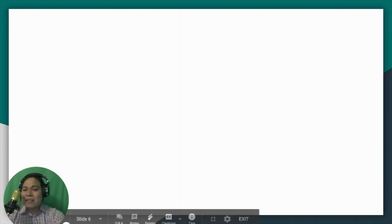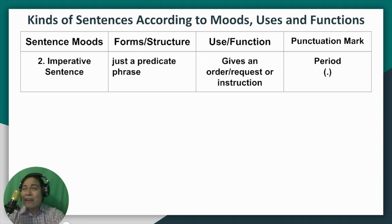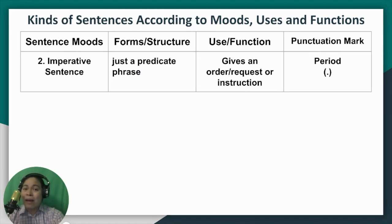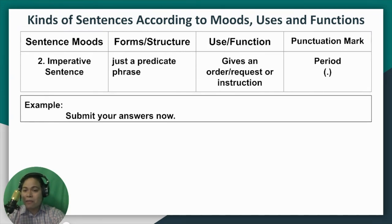That is declarative sentence. Let's proceed to number two: imperative sentence. Imperative sentence is formed using a predicate phrase, and it starts with a verb. Its function is giving an order, a command, a request, or an instruction. The punctuation to use is also a period. The difference between imperative and declarative is that declarative starts with a subject, while imperative starts with a verb because you are being commanded by someone else.